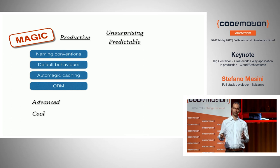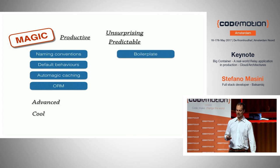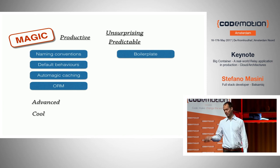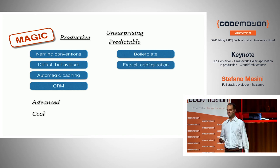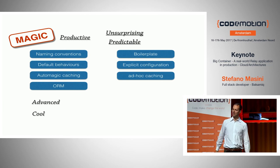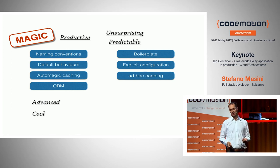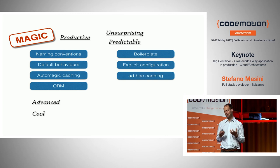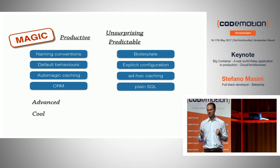I value much more code that is unsurprising and predictable, because then when I go back to it, I understand — and everyone else can understand if they join the team. So I welcome boilerplate if I have to, because it will be easier down the line, and I welcome explicit configurations. I'm happy to write as much configuration as needed as long as it's clear and explicit. Ad-hoc caching — caching is a hard beast to tame, and magic solutions for caching only solve part of the problem. Eventually you'll have to bite the bullet and implement caching in a specific way for your application.